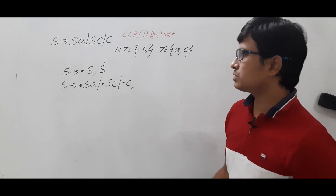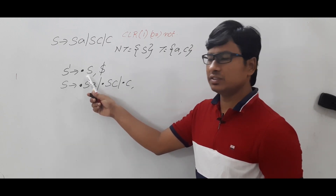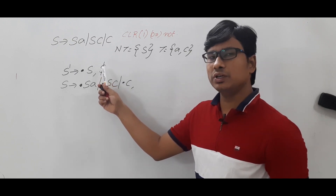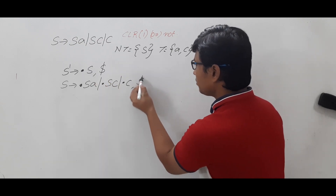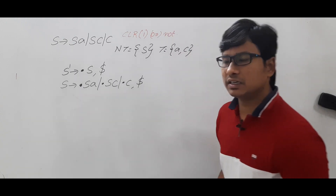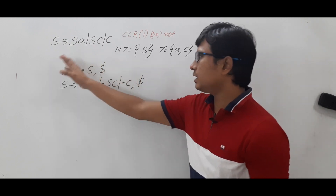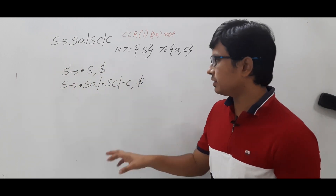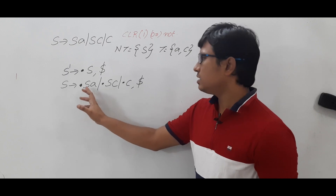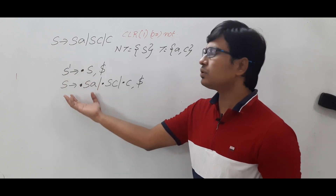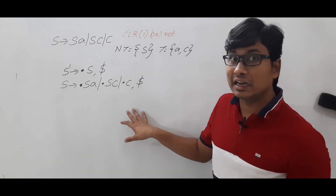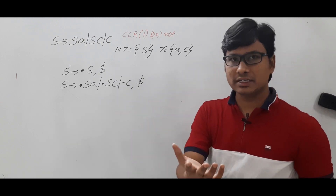What will be the lookahead? As you have written this production because of this S, leave that S and compute the first of the remaining thing. As the remaining part is only dollar, first of dollar is dollar — so the lookahead is dollar. Now a lot of students will do one mistake here. They will think it is completed, write it as I0, and go for I1 and I2. But that is a mistake. After the dot there is again an S — you need to check. This is LR1 items, not LR0 items. If it were LR0 items, I would have accepted your statement.